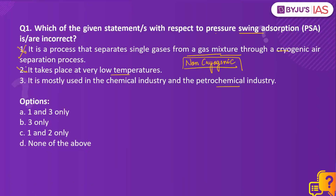This makes Statement 2 also incorrect, as PSA does not operate at very low temperatures. Statement 3 is correct — pressure swing absorption is mostly used in the chemical industry as well as the petrochemical industry. Other applications include separating oxygen and nitrogen from air, and hydrogen recovery and purification. Since the question asks for incorrect statements, option C — 1 and 2 only — is the right answer.